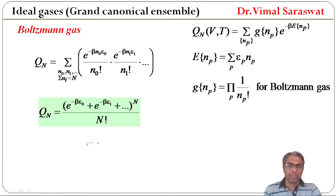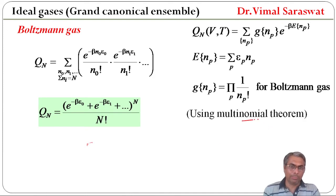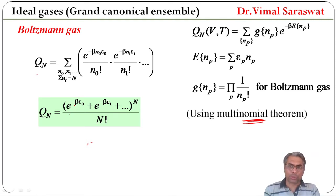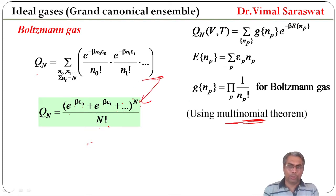By using the multinomial theorem, QN becomes: e raised to minus beta e0, plus e raised to minus beta e1, plus e raised to minus beta e2, and so on — the whole sum raised to power N, divided by factorial N.